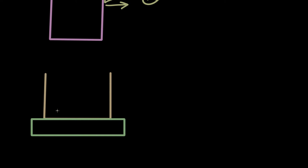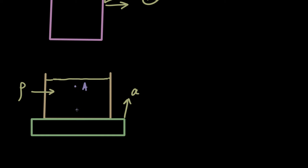Suppose this is our container and it is kept on some platform. This platform accelerates upwards with an acceleration a, which can be positive or negative. There is a liquid inside this container with density rho, and the liquid surface is visible. We want to find out how the pressure between two points — point A and point B, separated by a distance H — changes. Is it still ρgH, or is it going to be something else?